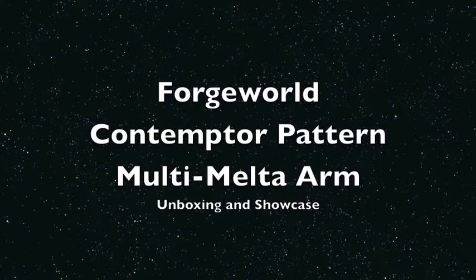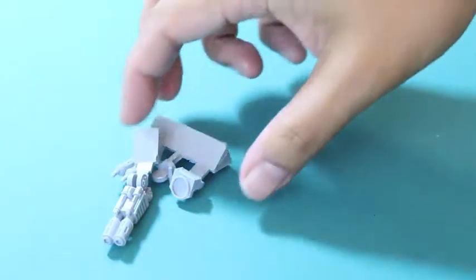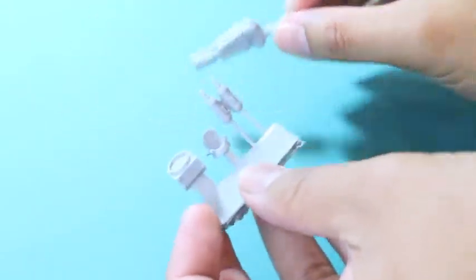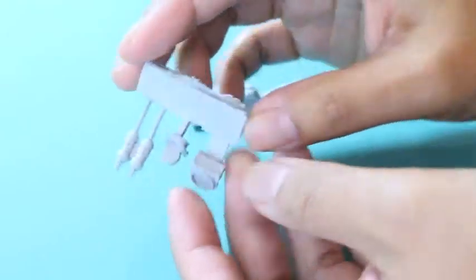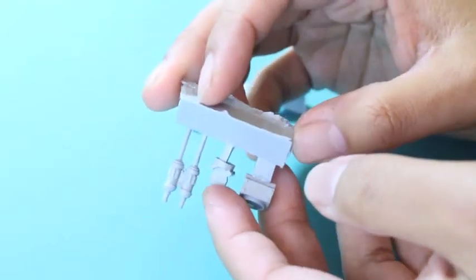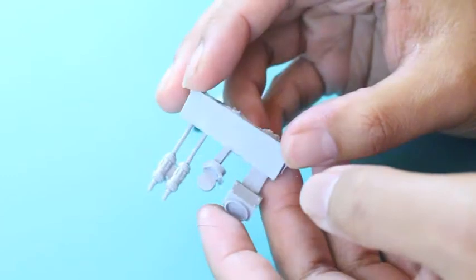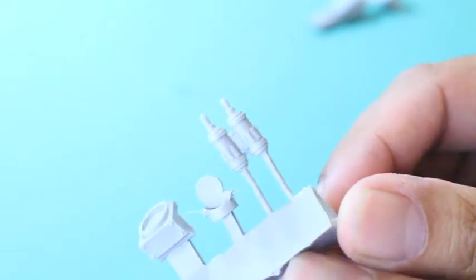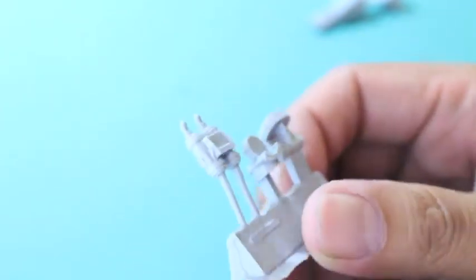This is a resin piece by Forge World. Like all of our Contemptor weapon options, it comes on two sprues. I thought it was just one, so on the smaller one you get the standard shoulder mount and the pivot piece that glue together to fit and angle the weapon into your shoulder. You also get these two tanks here on the end. I'm gonna be cutting those out and attaching those to the Multimelter gun.